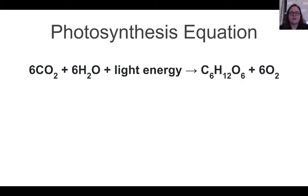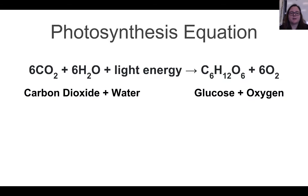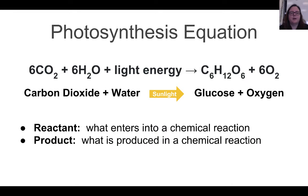Next, we're going to look at the equation for photosynthesis. We have carbon dioxide plus water, and it gives us glucose and oxygen. In order for this chemical reaction to take place, we need light energy from the sun. There are two important vocab words: the reactant, which is what enters into the chemical reaction, and the products, which are what is produced in a chemical reaction.